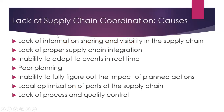What are the causes of lack of supply chain coordination? Causes include lack of information sharing and visibility in the supply chain — we have seen about supply chain visibility. Other causes are lack of proper supply chain integration, inability to adapt to events in real time, poor planning, and inability to fully figure out the impact of planned actions.